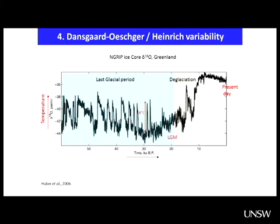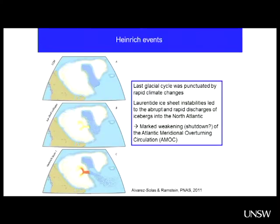Zooming in on the last 60,000 years: here's the last glacial period, the last glacial maximum, the deglaciation, and the present day. This is the Greenland δO18 record from an ice core, showing changes in temperature. Something very striking in this figure is the millennial-scale variability over the last glacial period — you see variations of about 8 degrees Celsius in less than 100 years. This is about half of a full glacial-interglacial cycle in Greenland. There has been a lot of study trying to figure out why this happened and what the consequences were on climate and the carbon cycle. This is what we call the Dansgaard-Oeschger and Heinrich variability.